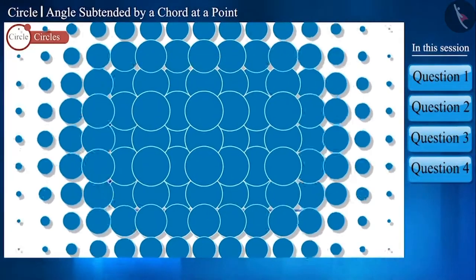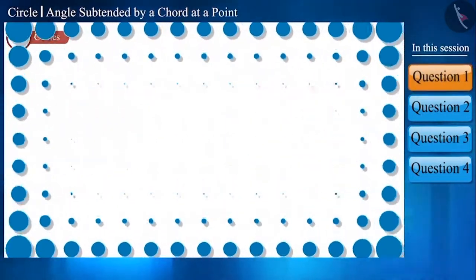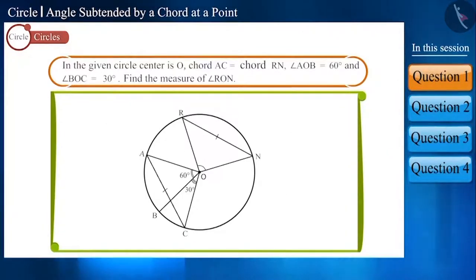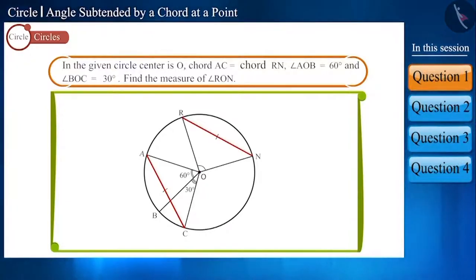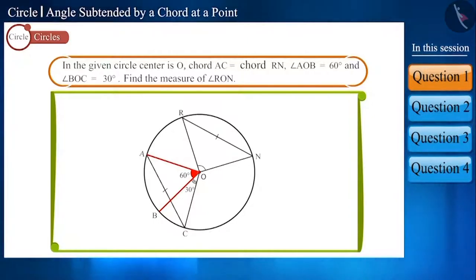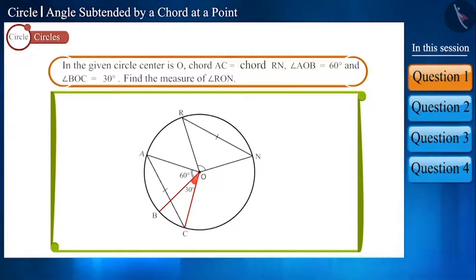Let's start with our first question. In the given circle, the centre is O. Chords AC and RN are equal, and we are also given that angle AOB measures 60 degrees and angle BOC measures 30 degrees. Find the measurement of angle RON.